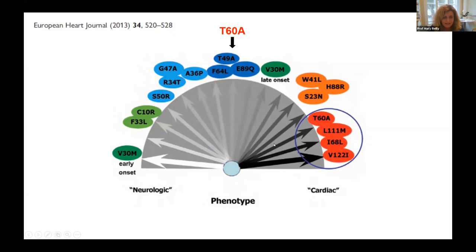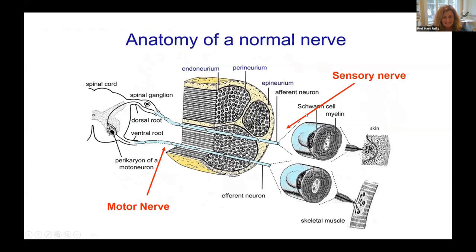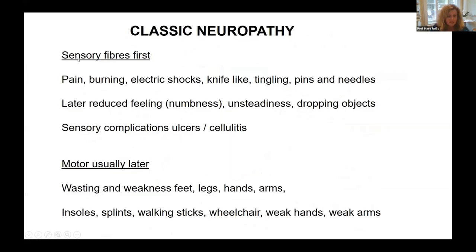In terms of the neuropathy, it tends to start in the sensory nerves first, then involve the motor nerves. The classic TTR neuropathy starts in the sensory nerves, usually involving the very small unmyelinated fibres — those pain fibres. So it's very common to present with pain or burning in the feet, accompanied by electric shock-like feelings, knife-like feelings, tingling, and pins and needles. We call all of those positive sensory symptoms — not that they're good, but they're producing something that isn't there.